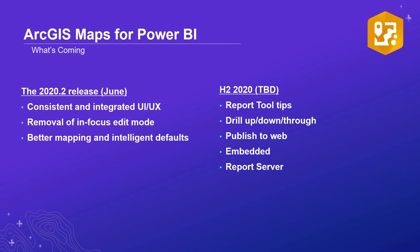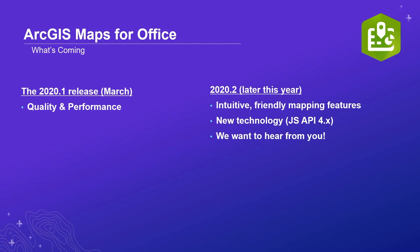Let's move on to Maps for Office. We just had a release of Maps for Office mid-March, March 17th — that was a quality and performance improvement release. If you are using Maps for Office and haven't gotten that yet, I really encourage you to get it because there's some important stuff in there. Later this year we are planning to implement some new technology to make the product more performant, faster, quicker, work better with larger data sets, and add intuitive mapping features.